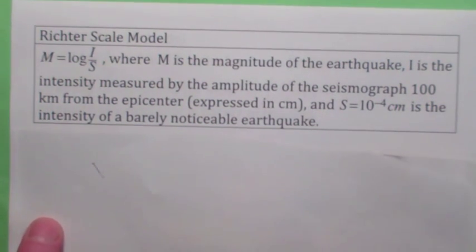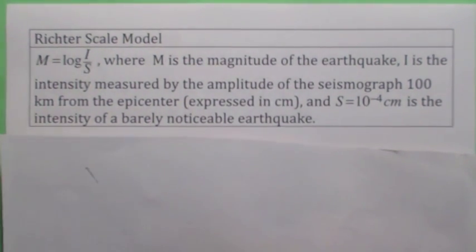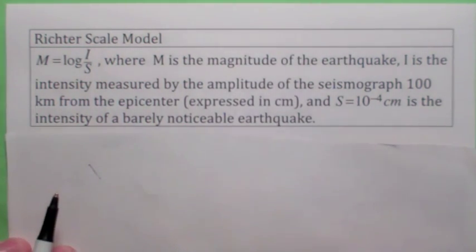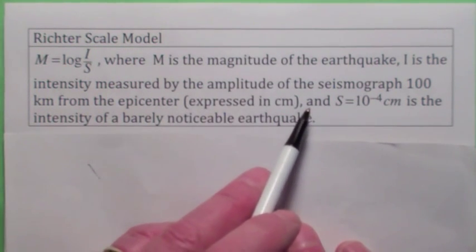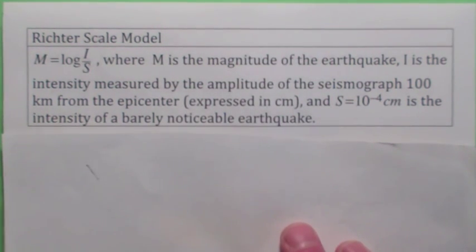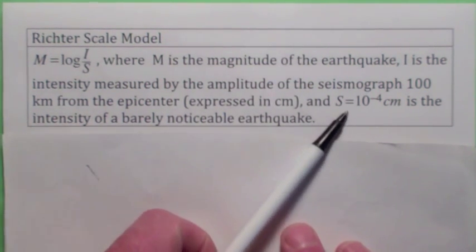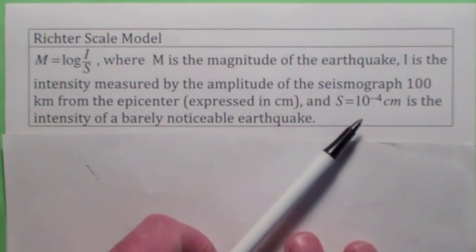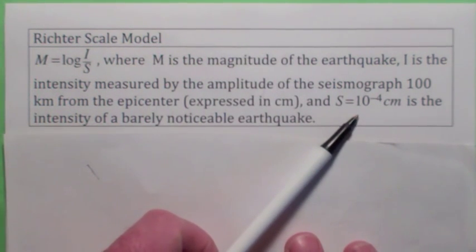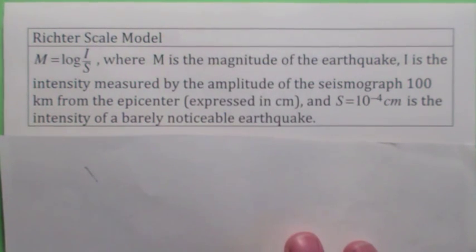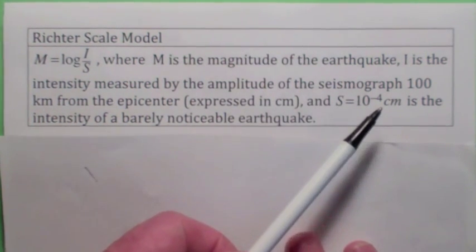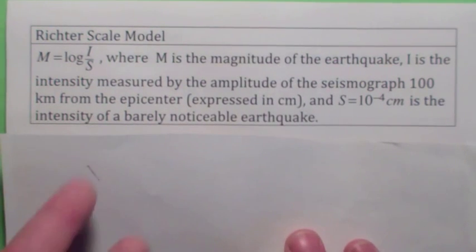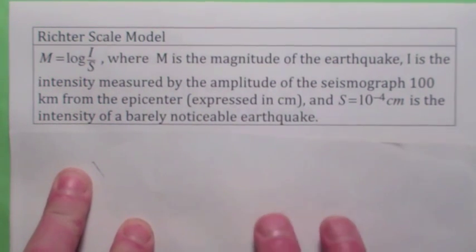In this next example, let's look at the Richter scale, which is a measurement for the intensity of earthquakes. The intensity I is measured in terms of how many centimeters the seismograph moves. We have this thing called S — S is the threshold by which you can notice the earthquake. Any earthquake smaller than this, you wouldn't notice; any earthquake greater than this, you would. Think of S as the threshold by which you could start to feel them.